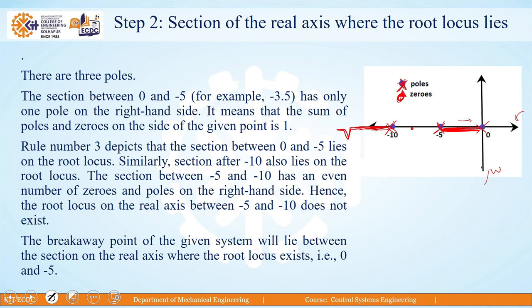This step also helps define the breakaway and break-in points. Since the root locus branch exists between two poles at 0 and −5, there will always exist one breakaway point between them. We will see in the next rule how breakaway points and asymptotes are defined.